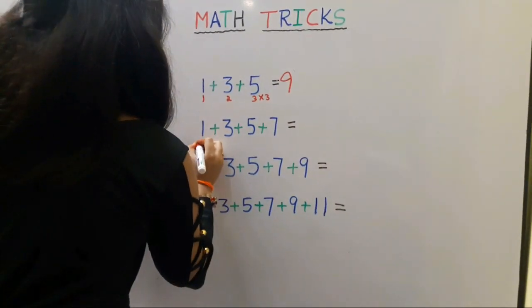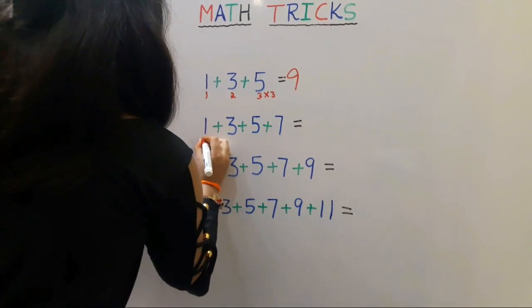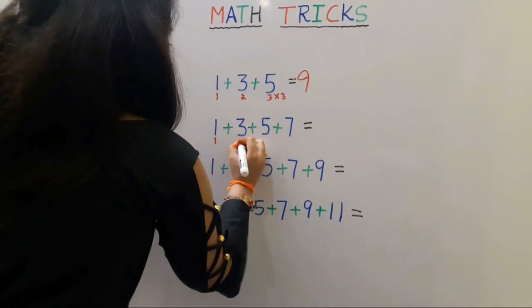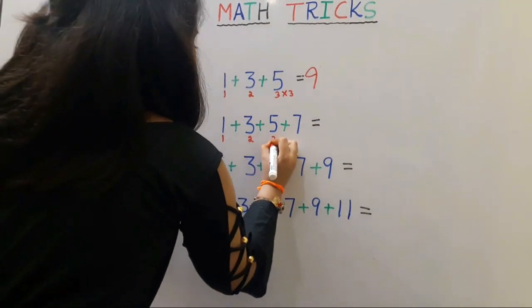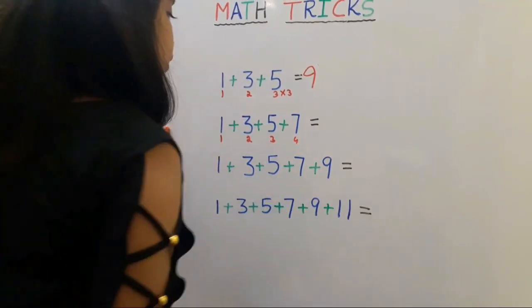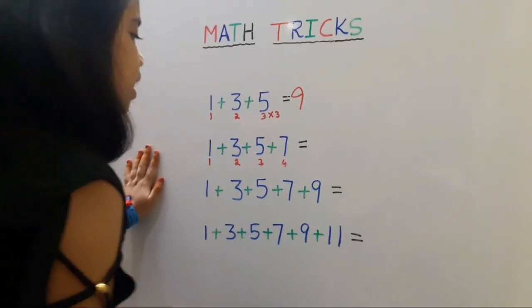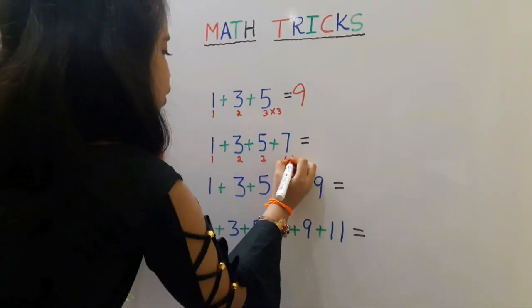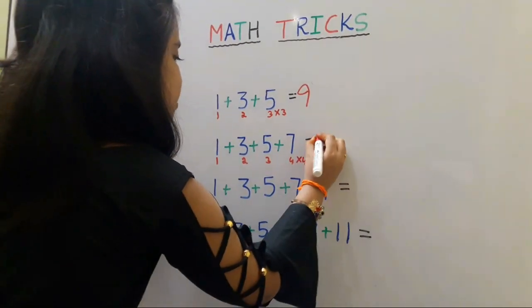Next sum. Again we should count the numbers: 1, 2, 3, 4. We should multiply by the same number. 4 4's are 16.